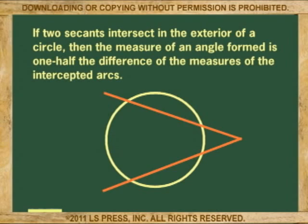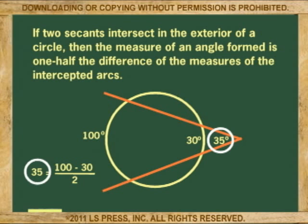If two secants intersect in the exterior of a circle, then the measure of an angle formed is one-half the difference of the measures of the intercepted arcs.